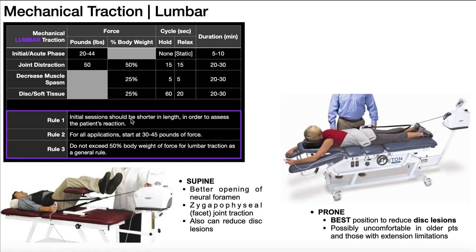The same rules apply here. Initial sessions need to be shorter in length — assess the patient's response and increase duration in later sessions if they tolerate it well. For all these applications, we want to start at 30 to 45 pounds of force, with the exception of the initial phase where we start a bit less. In general, we don't want to exceed 50% of the person's body weight of force for lumbar traction.